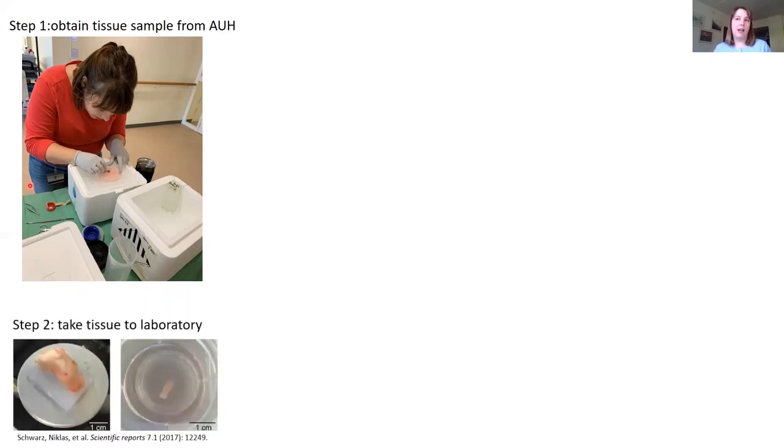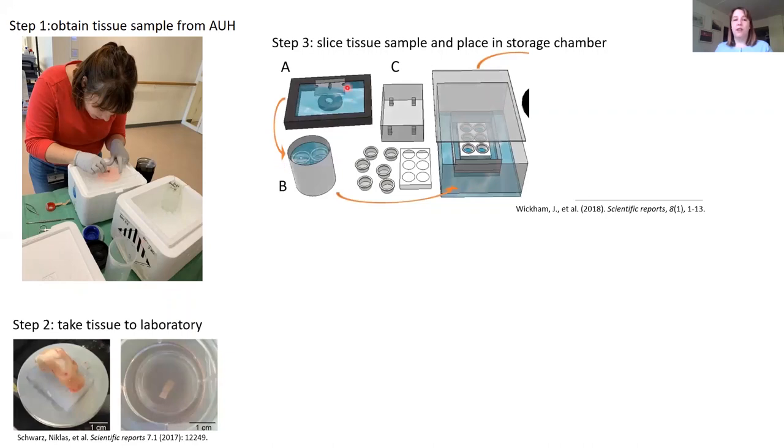Step two, we bring that sample to the laboratory. I'm usually a bit too busy focusing on the sample and what I'm doing to take my own pictures, but here's an example from a paper from a group in Germany who works in a similar way. And so this is an example of what the human brain tissue sample actually looks like. From there, we slice the brain very thin and store them in a specialized container similar to this one, again still submerged in artificial cerebral spinal fluid to keep these slices alive throughout the day.